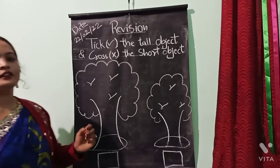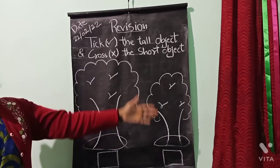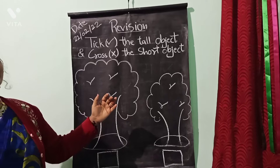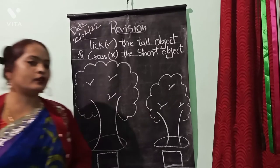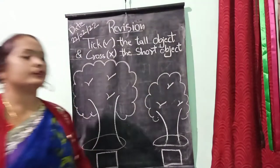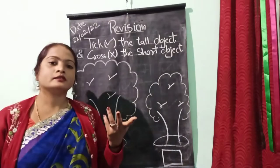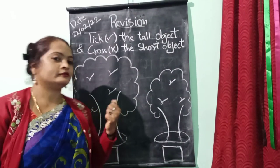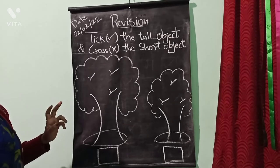Children, these are trees. One is tall and another is short. So, tell me, children, which tree is tall? This tree is tall.